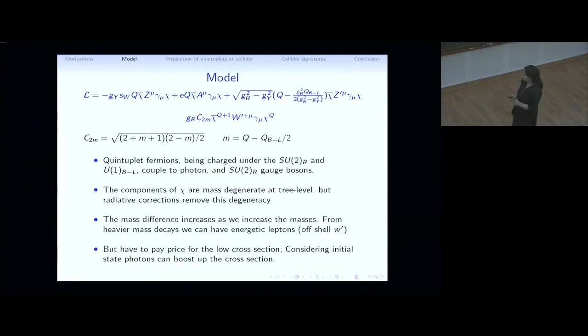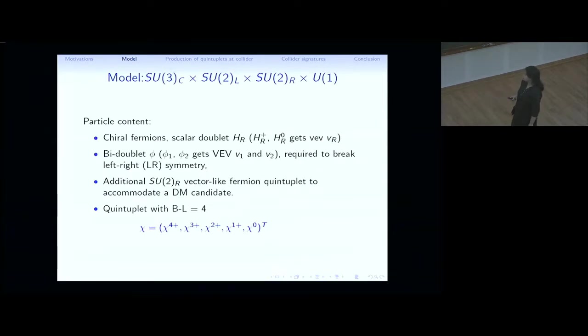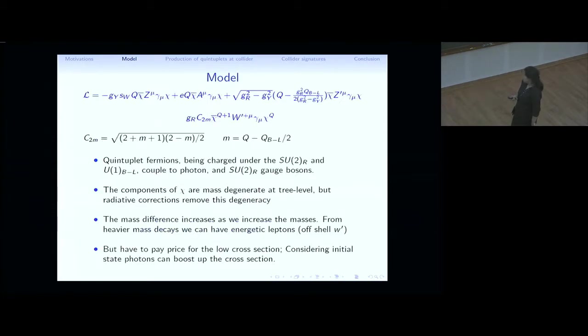And this mass difference increased as we increase the masses as it has been shown in the previous talk. If we go to the heavier mass, and the heavier mass decays to the next heavier masses, then we can have energetic leptons via the off-shell decays of W prime. If we produce Chi4 plus 4 minus, then it can go through a decay chain, both of them. And then we can get leptons in between. But if we take the masses of these particles to be much higher, we have to pay price for the lower cross-section. We have considered something that the photon-photon fusion cross-section, which will help to boost up the cross-section that I will show you later.